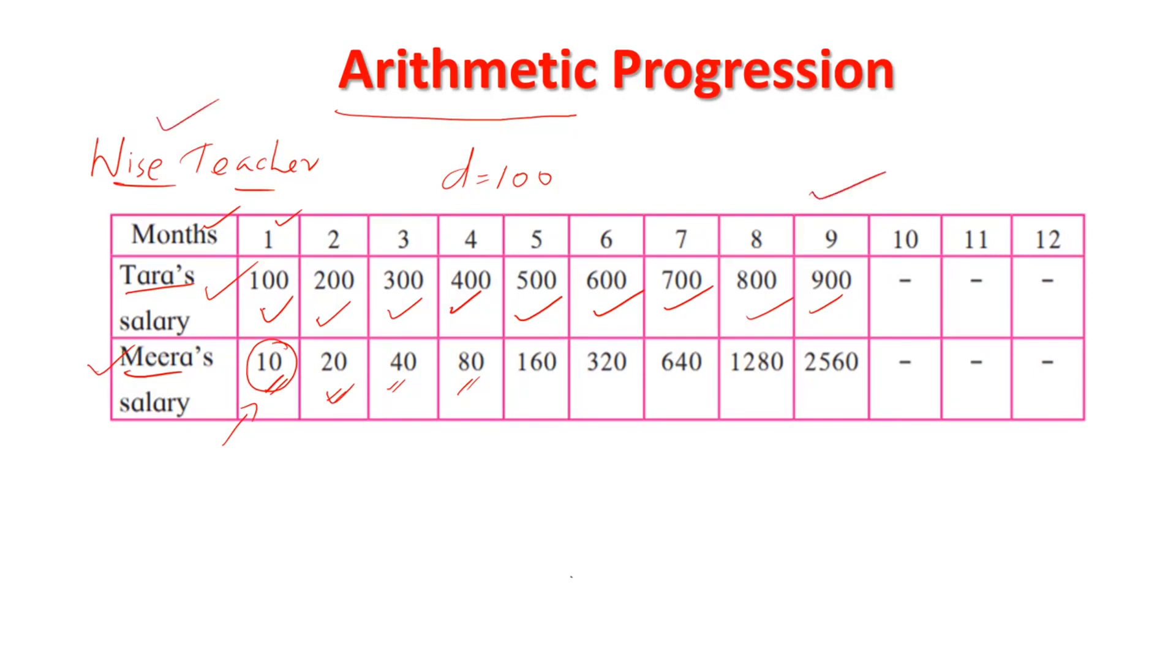But it so happened that Meera teacher was really the wise teacher here. At the end of ninth month, the employer realized that Meera teacher is drawing a salary of 2560 gold coins. At that time, Tara teacher is drawing a salary of 900 rupees. And you know that next month, Tara teacher will be getting 1000 gold coins. Here, Meera teacher will be getting 5120 gold coins. Can you understand?